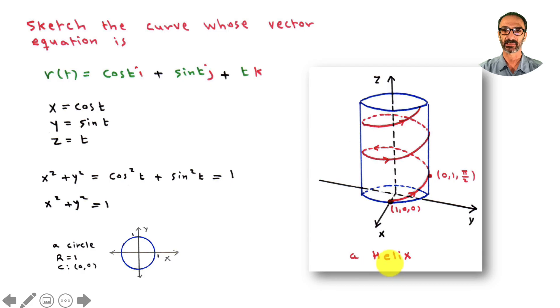As t keeps increasing, you're going to go around but you're also going to go up at the same time. This is called a helix. It's kind of like you are tracing the surface of a cylinder. The cylinder projection down is a circle with radius one centered at the origin.